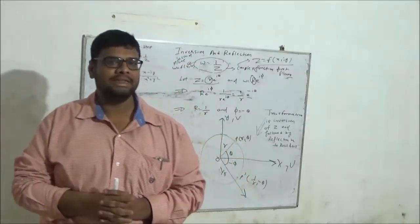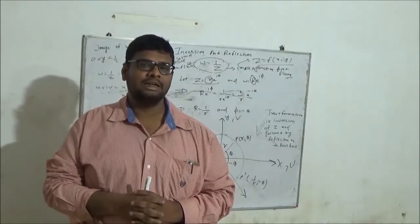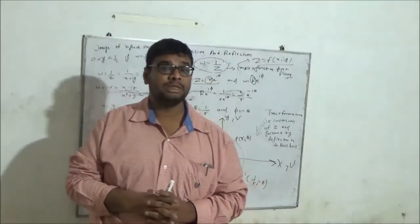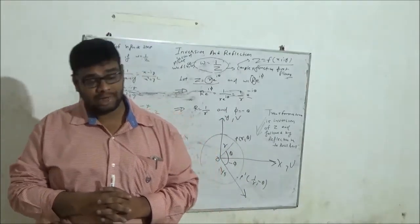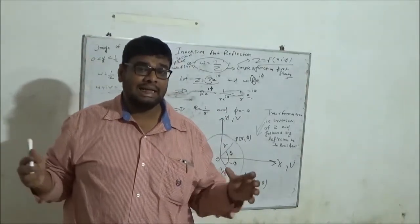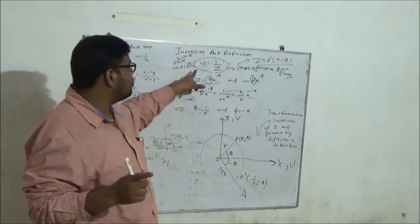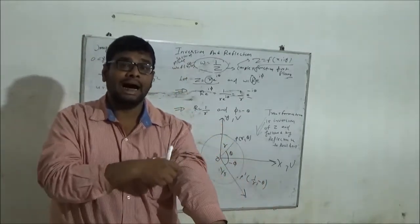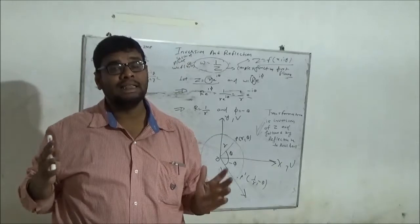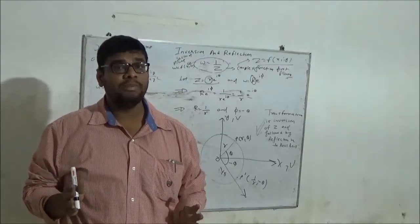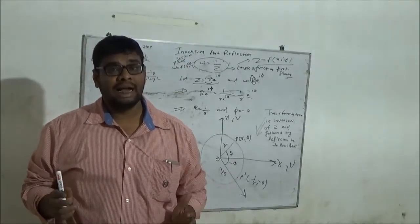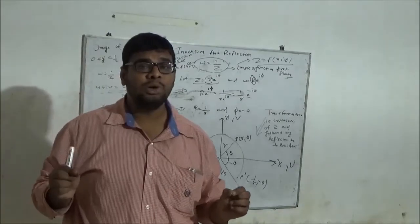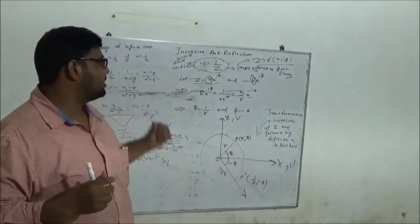Okay friends, in the last video we have discussed the transformation of the complex function from one plane to another plane — the transformation of the z-plane into the w-plane. Today our focus is: if the two planes are in such a relation that w is equal to 1 upon z, meaning the w-plane and z-plane are in inverse relation, then what will be the geometrical interpretation, and we will also solve one numerical problem to understand the importance of inverse and reflection.